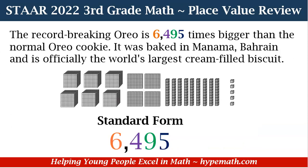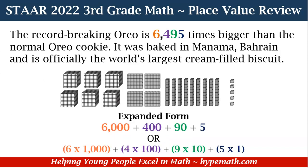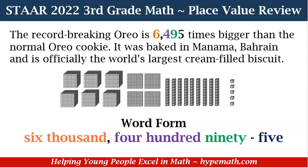Next, let's look at it in standard form — and like we said before, standard form means it's just written as a number. Now let's look at expanded form. We have both ways we can write it: 6,000 plus 400 plus 90 plus 5, or in expanded notation form: 6 times 1,000 plus 4 times 100 plus 9 times 10 plus 5 times 1. And you guessed it — in word form, we have 6,495: six thousand, four hundred ninety-five.